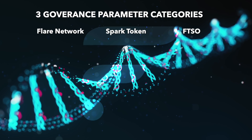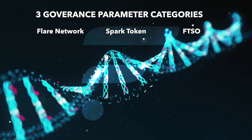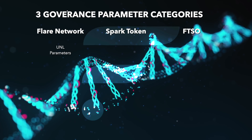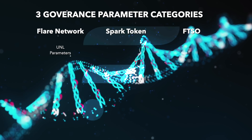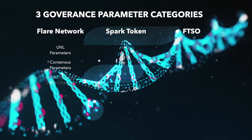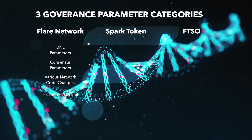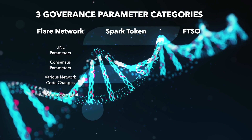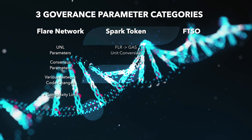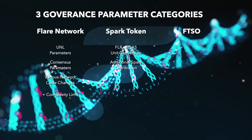Let's start with the Flare network parameters. Holders of Spark will be able to vote to change the UNL, or unique node list parameters, consensus parameters, and various network code changes. Regarding the Spark token, holders can vote to change the Spark-to-gas unit conversion and additional Spark distributions.